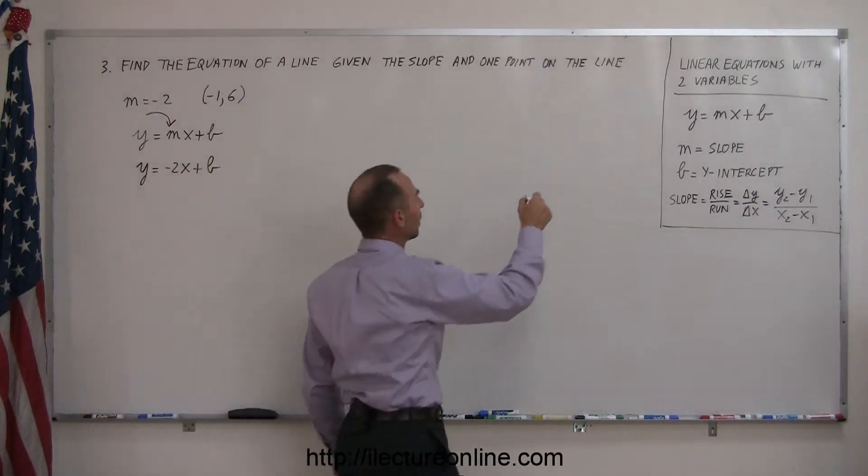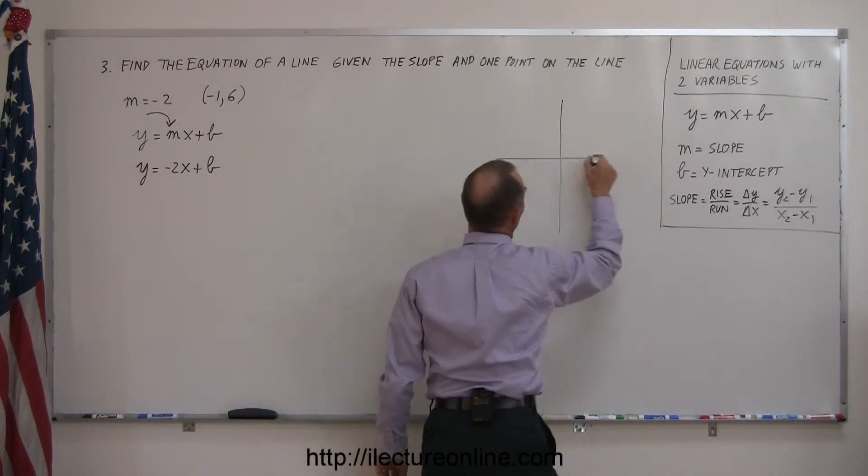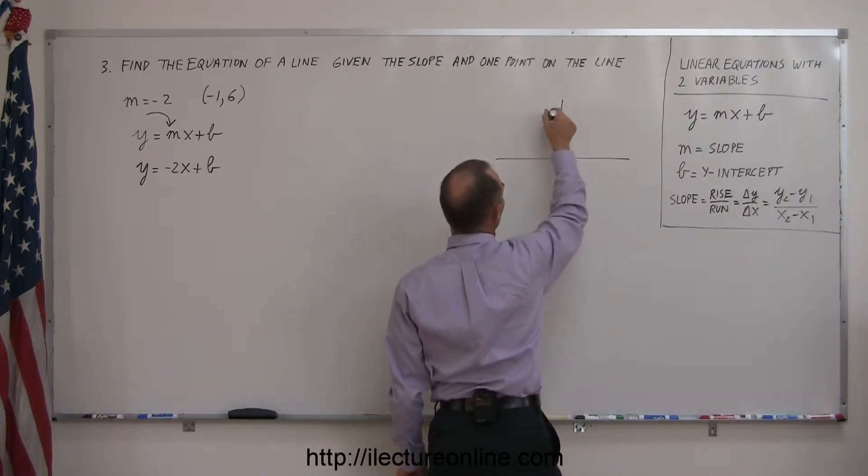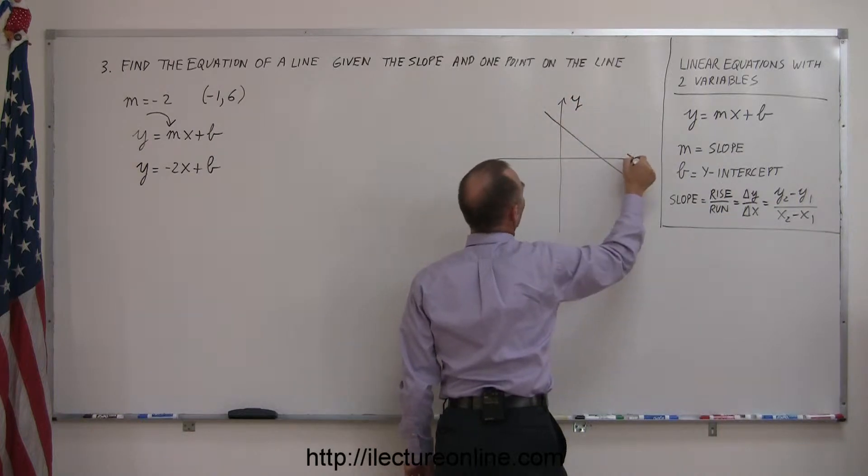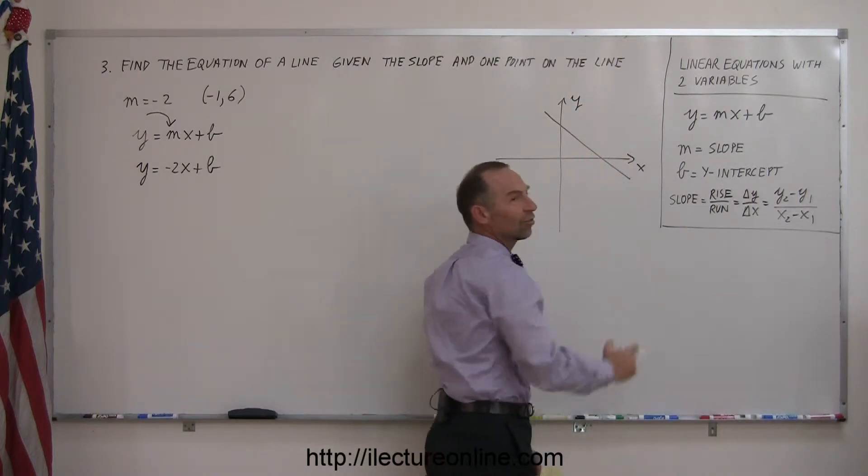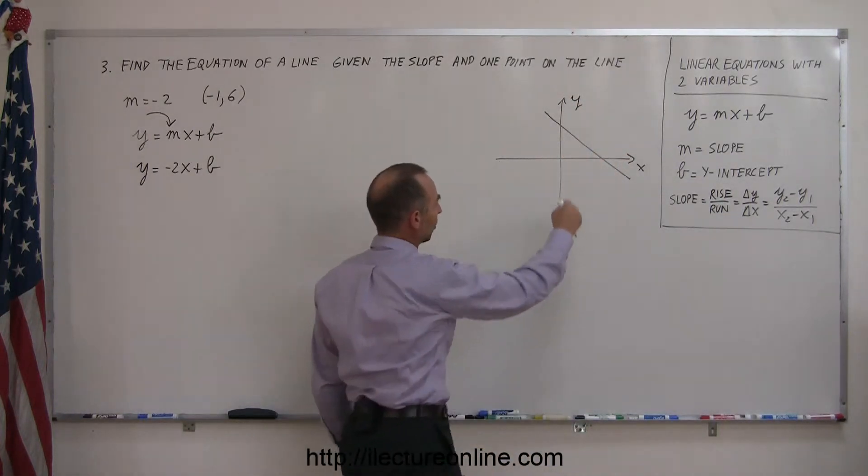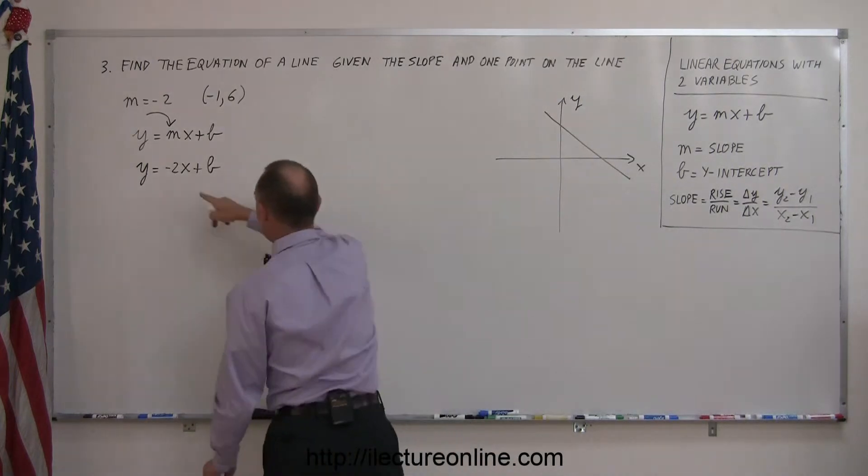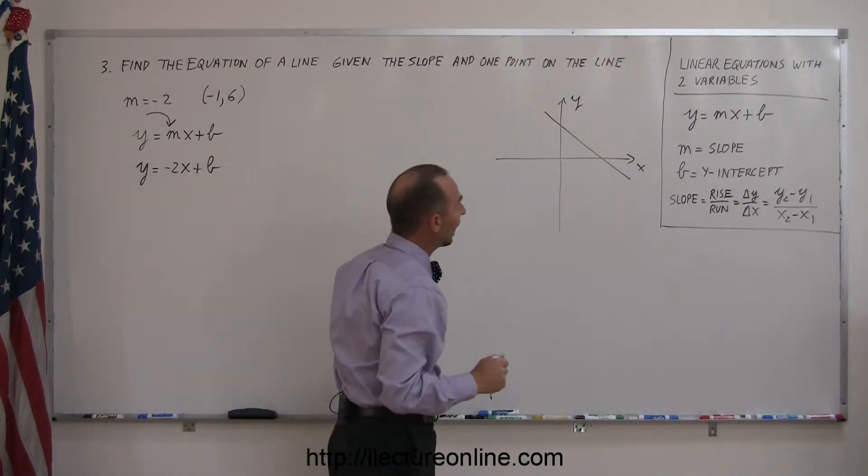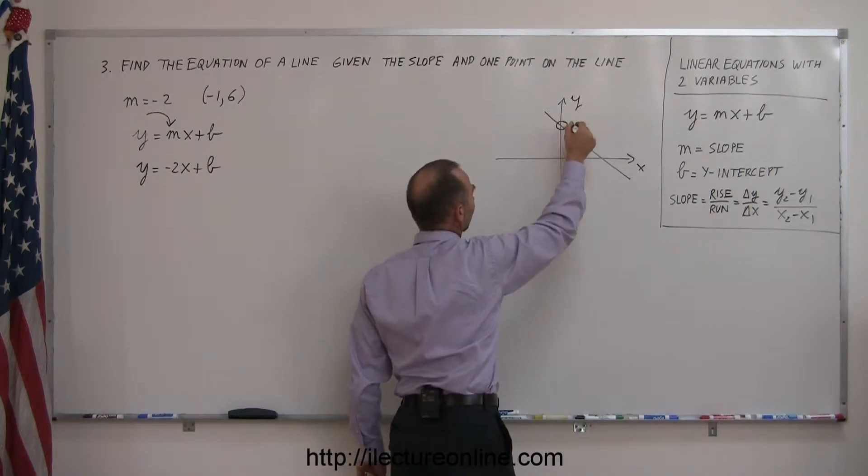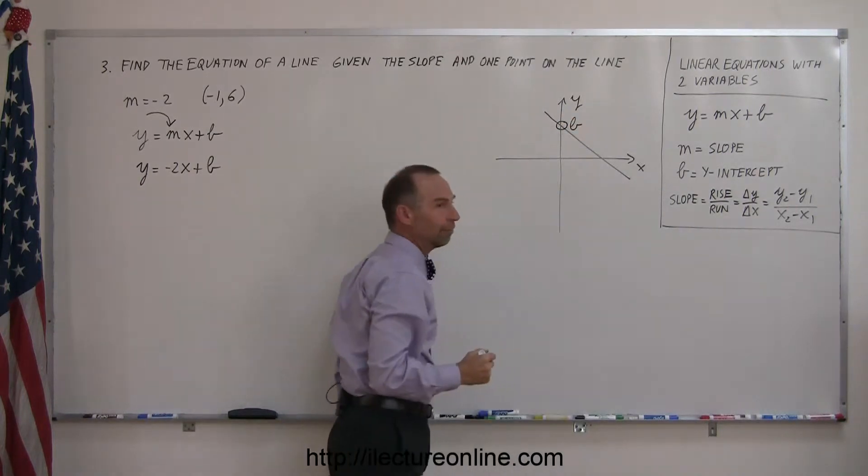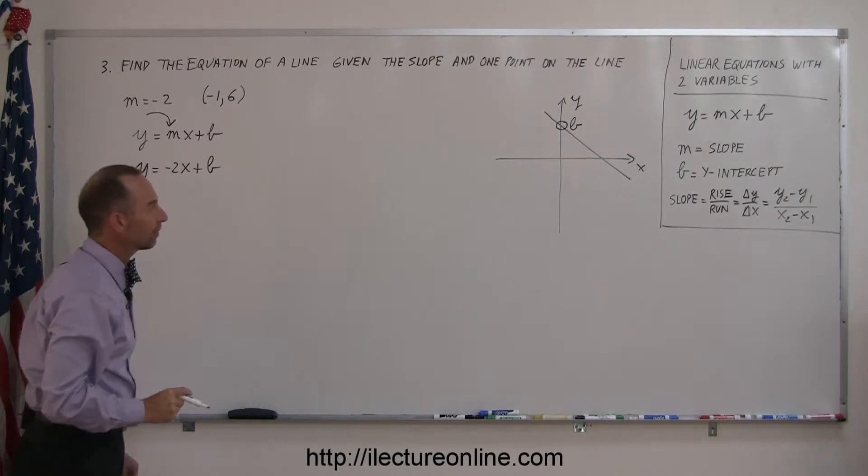Remember when you're dealing with lines that are representative of linear equations, for example something like this. There's your y-axis, there's your x-axis. The slope of course is the steepness of the line, in this case the slope would be negative, like here negative 2x. And b is the point where it crosses the y-axis, that's your y-intercept. You're trying to find that point.